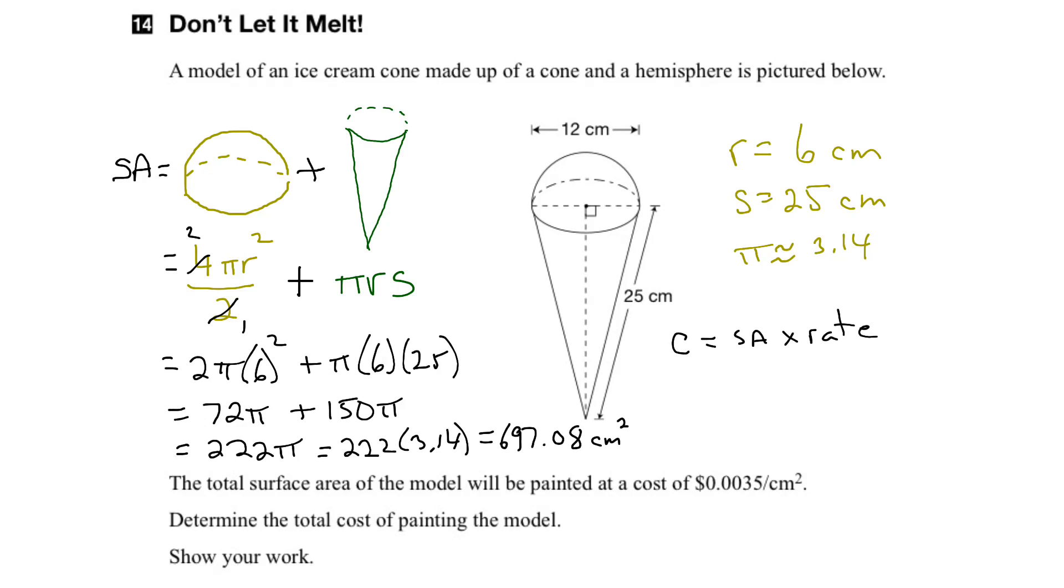So this would be 697.08 centimeters squared times 0.0035 dollars per centimeter squared. And what we can see here is that the centimeters squared would cancel out, and we're left with the dollars, which is what we want.